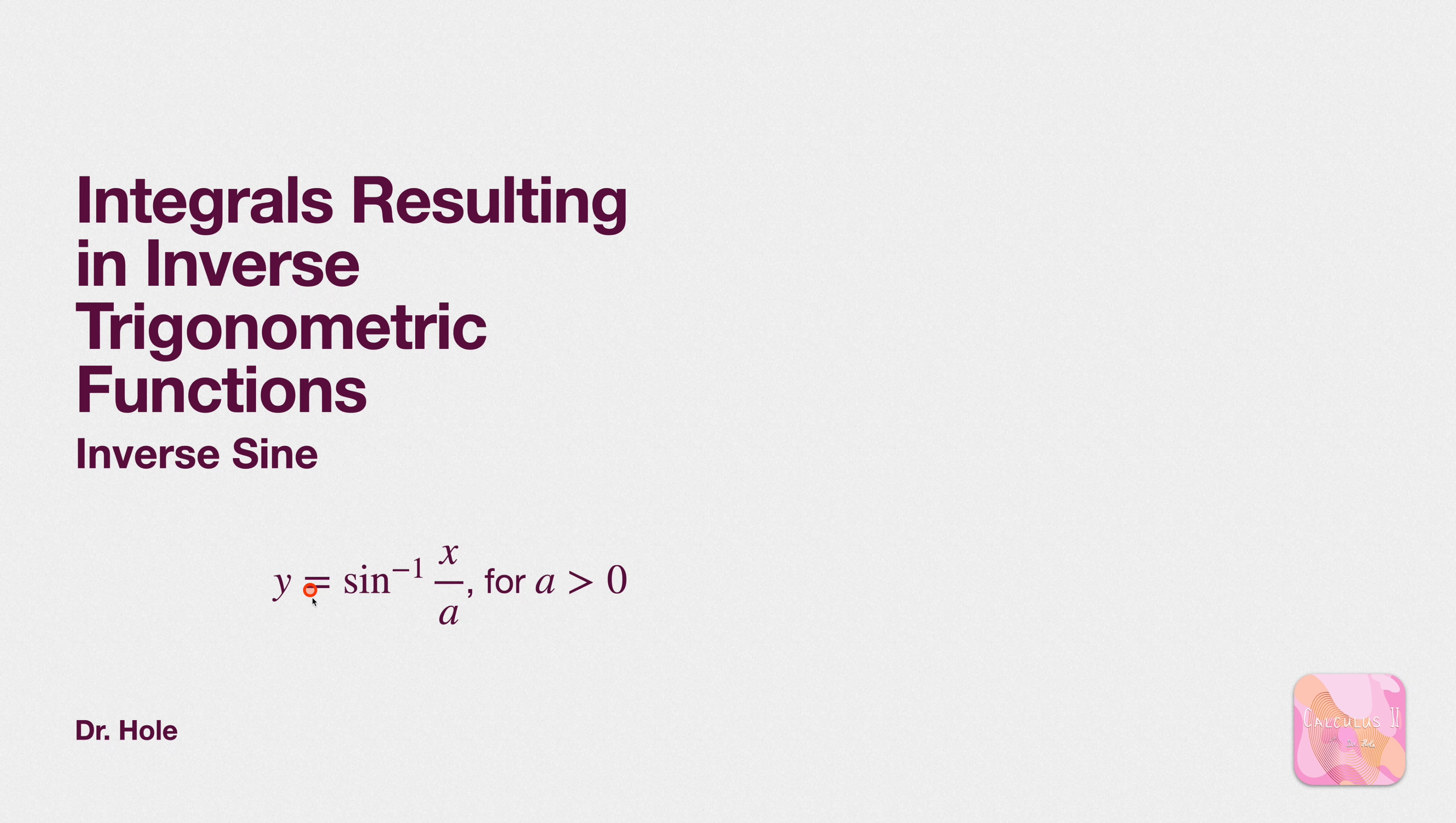Here's two true-false statements. We have a as a non-zero value. The domain of arc sine of x over a is negative 1 to 1. True or false? Second statement, if y is arc sine of x over a, then cosine of y is non-negative. Is that statement true or false? And remember that non-negative is anything which is not negative, so that allows for 0 and positive values.